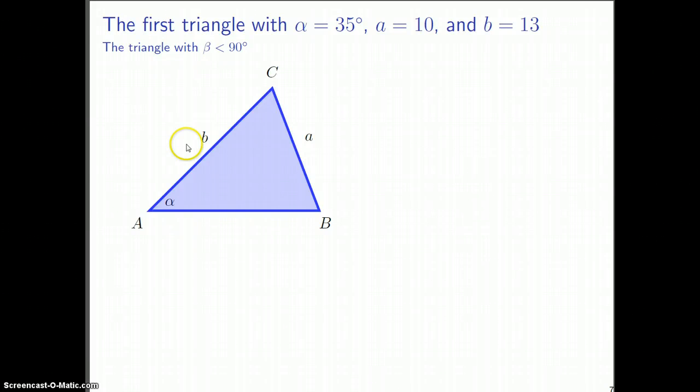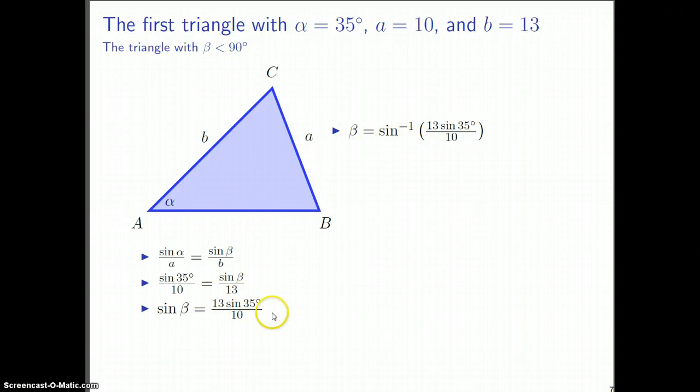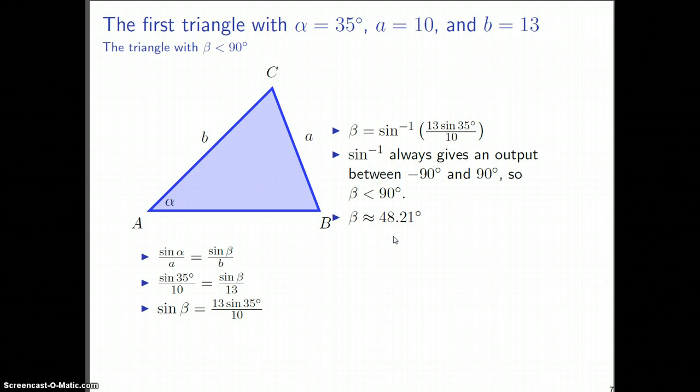Let's start with that first triangle. Apply the law of sines to it. We have alpha, we have a, we have b, but we don't have beta. So we can set up one part of the law of sines here. Plug in what we know. To solve for sine of beta, you get 13 sine of 35 degrees all over 10. Then beta is found by applying sine inverse to this fraction right here. The point is that sine inverse always gives you an output which is between negative 90 degrees and positive 90 degrees, and this is what we want right now. Our picture shows us that the angle beta is acute. If you punch that into a calculator, you get about 48 degrees.